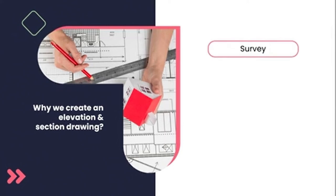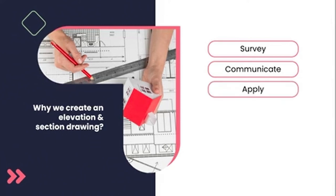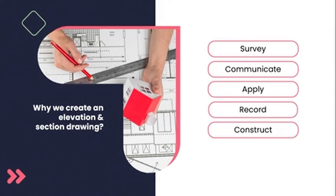Let's look at why elevation and section drawings would be created and what purpose they serve. They would be used to survey and record information about existing buildings. They're used to communicate information on site to contractors or clients, and to apply to council or city planning for building permission or permits. They are used in construction — you can actually build from these drawings. And they can also be used as marketing tools, using 3D elevations and sections to market property or show clients more information about buildings.